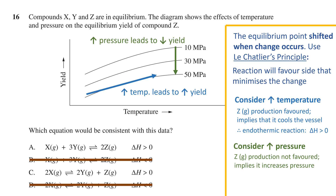That means the production of compound Z is not favored in this case. As per Le Chatelier's principle, the reverse reaction decreases the pressure and is the favored reaction, while the forward reaction increases the pressure. This means the forward reaction — production of Z — should create more gas molecules compared to the reverse direction. More gas molecules in the same space would put more pressure on the container, so we want more gas molecules on the product side than the reactant side.